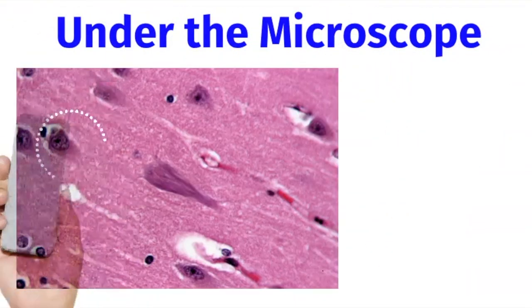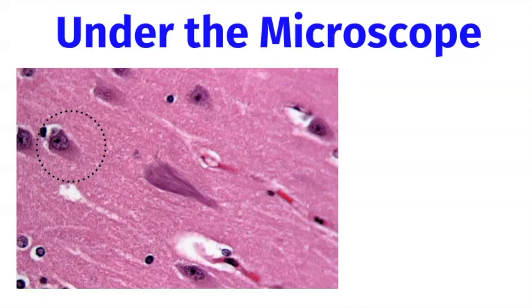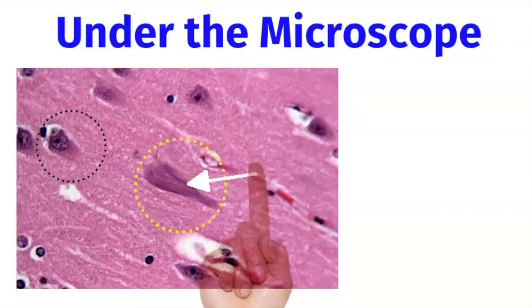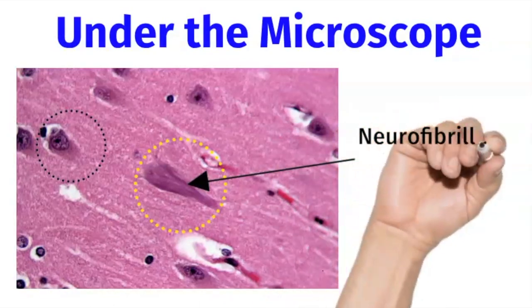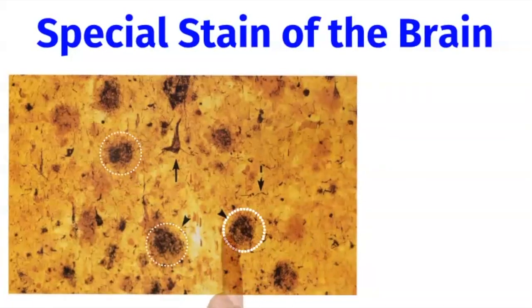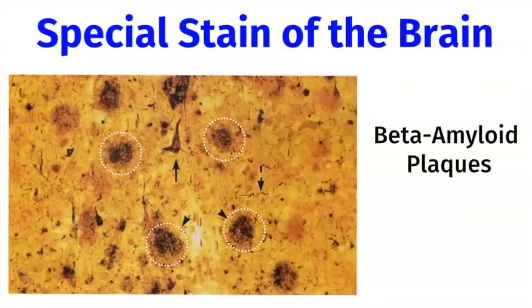This is what a normal neuron looks like under a microscope. But in Auguste's brain, Dr. Alzheimer found a lot of abnormal neurons. They were filled with neurofibrillary tangles made from a protein called tau. Then, with a special stain, he found that her brain had numerous beta-amyloid plaques. These are now considered the defining histological features of Alzheimer's disease.